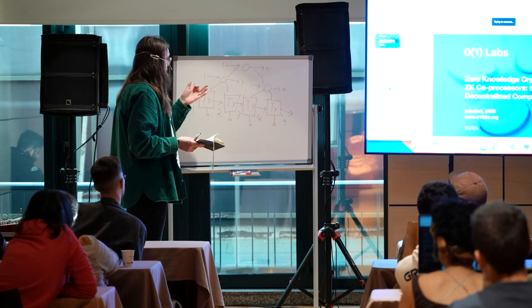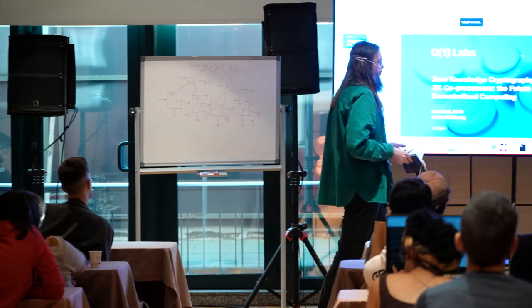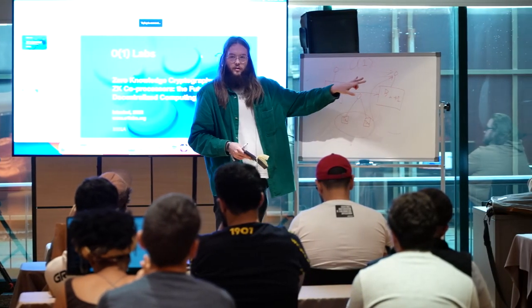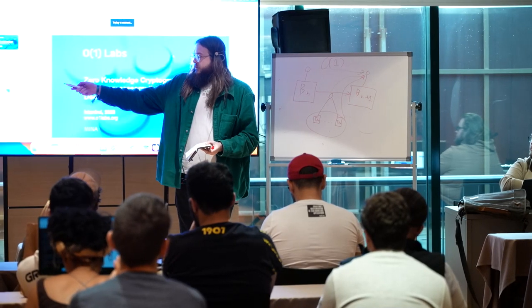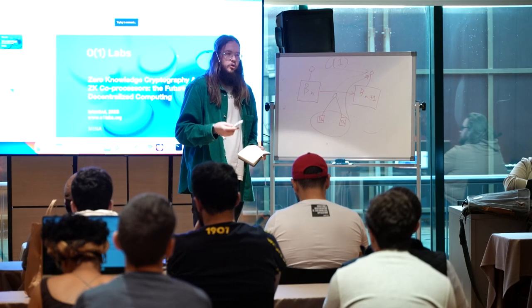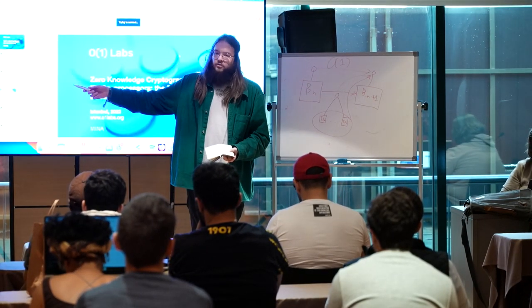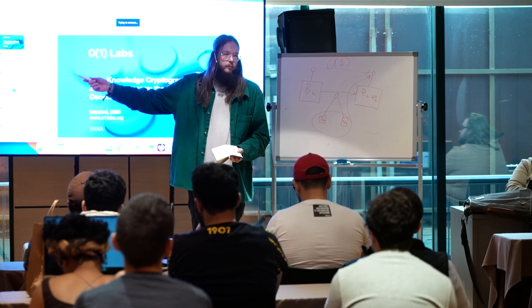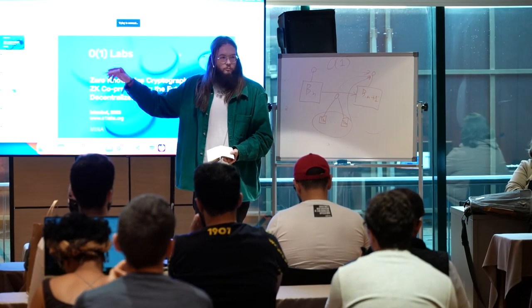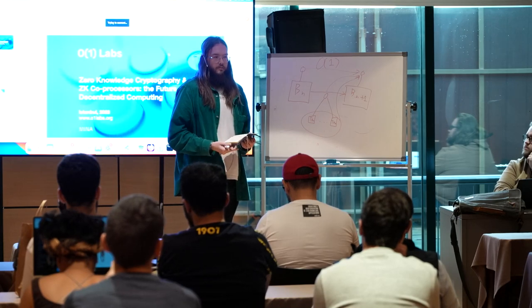In terms of actually making sure you can compute all of this: it's unrealistic to have every single block producer compute all those transaction proofs every time we produce a block. But because this is tree-based recursion, you can actually do this in parallel. If you don't require each block producer to do all of these proofs, you can make this work available to a larger network of nodes, and then that larger network can work in parallel to produce all this work so that block producers can then purchase that work back from the network.